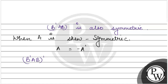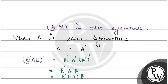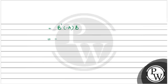First, we take the transpose of B'AB. The transpose becomes B transpose, A transpose, and then transpose of B transpose. Since B transpose per transpose is always equal to B, we get B transpose, A transpose, B. We also know that if A is skew-symmetric, then A equals negative of A transpose, so A transpose equals negative of A. Substituting, we get B' times negative A times B, which equals negative of B'AB.